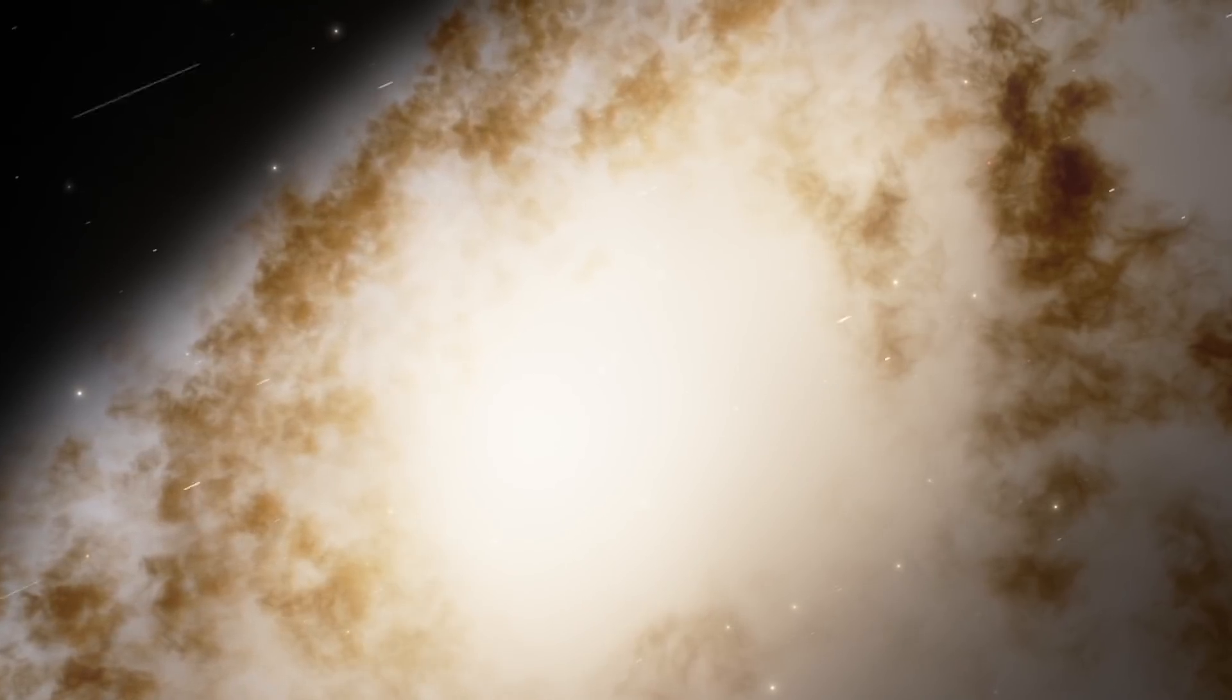The scientists were able to stitch together images and discover what the center looks like. This is really important because generally speaking, because the center of the Milky Way is relatively active and there is a lot of gas everywhere, we normally don't really get to see any details coming from this region.